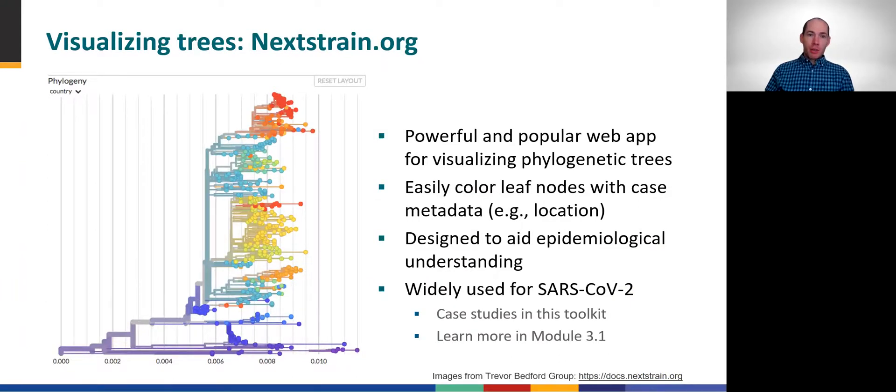You will primarily see rectangular rooted trees throughout this toolkit. A popular web application for visualizing phylogenetic trees is nextstrain.org. This tree application has been widely used for tracking sequences of SARS-CoV-2, and its developers, led by Trevor Bedford and Richard Nayar, are actively maintaining numerous phylogenetic trees calculated from public sequence data repositories. Nextstrain is popular among academic researchers and public health laboratories alike, and will be featured in some of the case study modules later in this training toolkit. For an introduction to using Nextstrain, be sure to visit Module 3.1, and you can find much more detail within the excellent documentation at nextstrain.org.